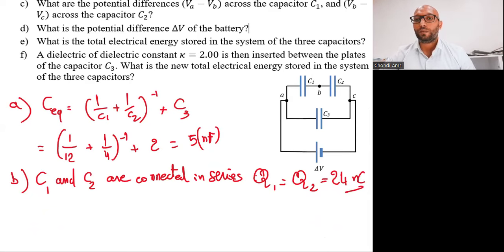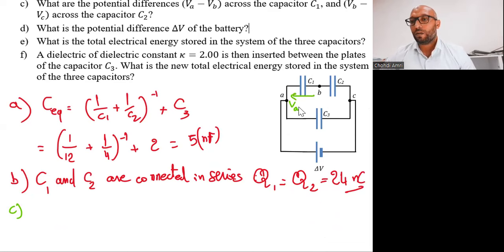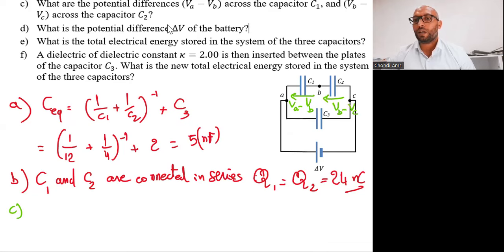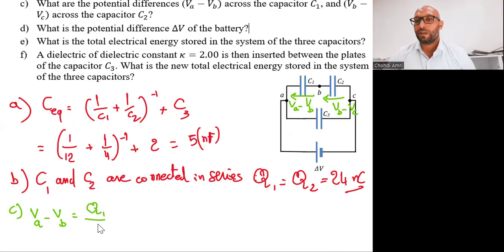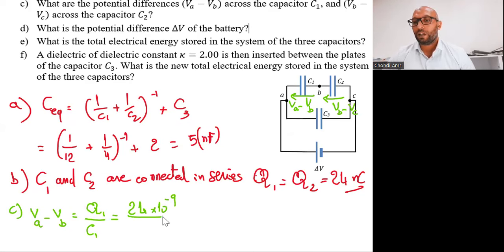Question three: what are the potential differences VA minus VB, and the potential difference VA minus VC across capacitor C2? The potential difference across the capacitor, VA minus VB, is equal to the charge of the capacitor Q1, which equals 24 nanocoulombs, divided by the capacitance C1.